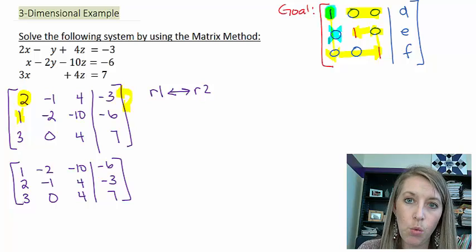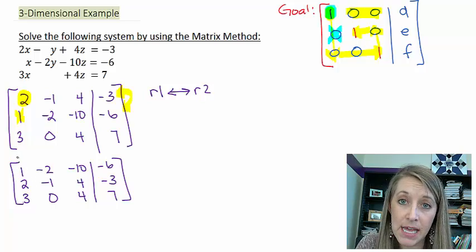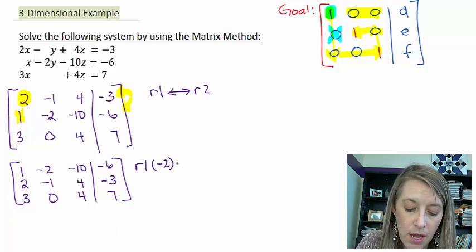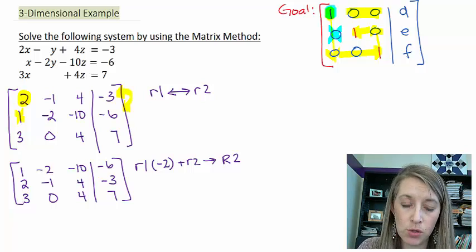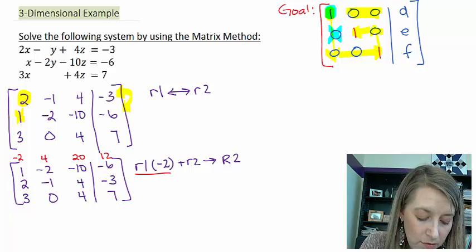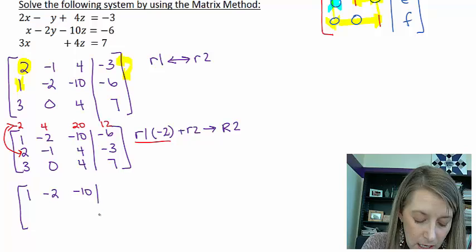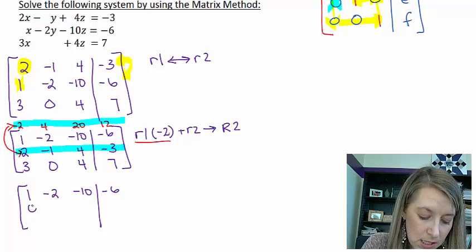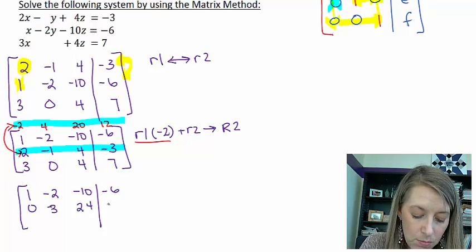Now I want to get a 0 below that leading 1. I'll compare to row 1, taking row 1 times -2 and adding it to row 2. Scratch work: row 1 × (-2) gives -2, 4, 20, 12. Adding to old row 2: negative 2 plus 2 gives 0; 4 minus 1 gives 3; 20 plus 4 gives 24; and 12 minus 3 gives 9. So my new row 2 is 0, 3, 24, 9.